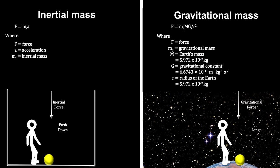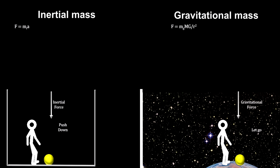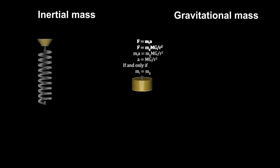These are two very different definitions for mass. For these two to be compatible, the inertial mass and the gravitational mass for any object would have to be equal.